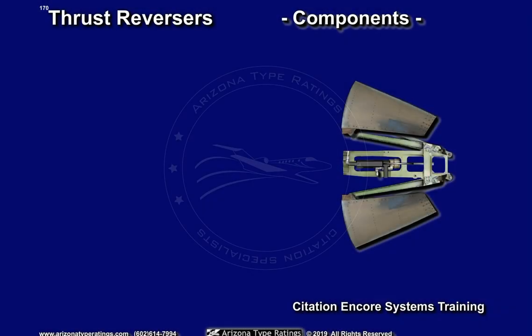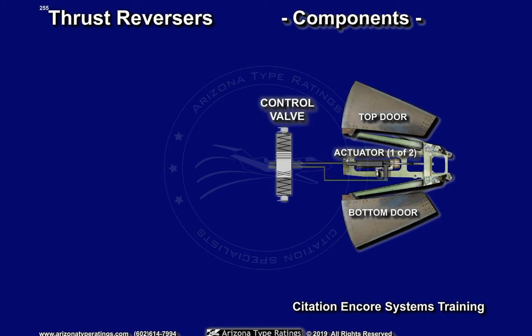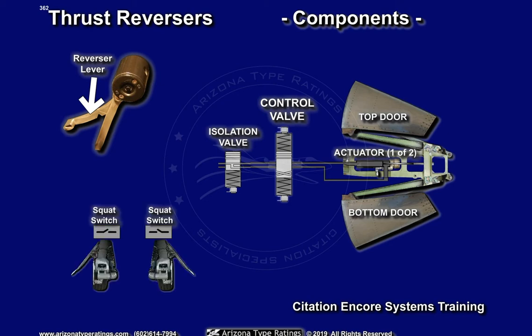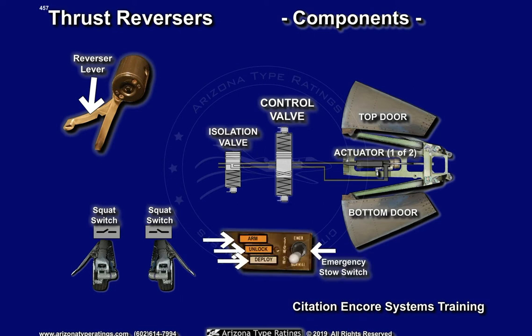Each thrust reverser system consists of a top and bottom reverser door, two hydraulic actuators, a control valve used to direct hydraulic flow, an isolation valve, a thrust reverser lever mounted piggyback on the thrust lever, squat switches located on the left and right main landing gear, three enunciators to display reverser status, and an emergency snow switch.